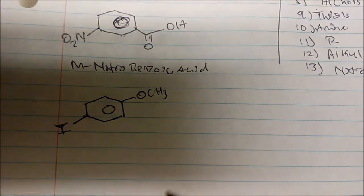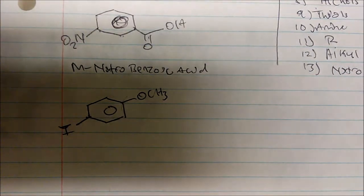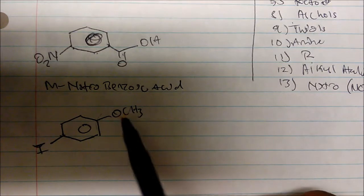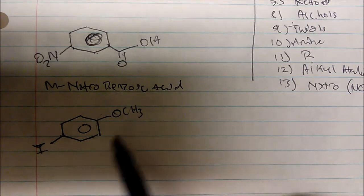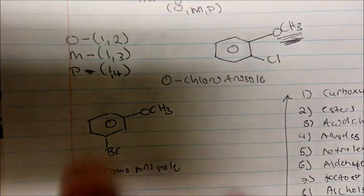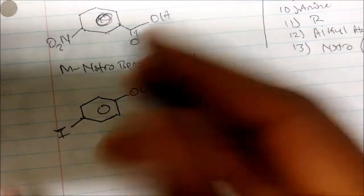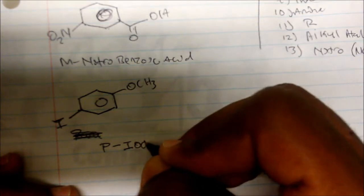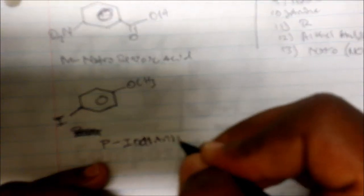Next example: we have an OCH3 group and an iodo substituent on the ring. The parent is anisole since R groups rank above alkyl halides. Counting the positions: 1, 2, 3, 4 — the substituent is 1,4-substituted, which is para. So this compound is named p-iodoanisole.